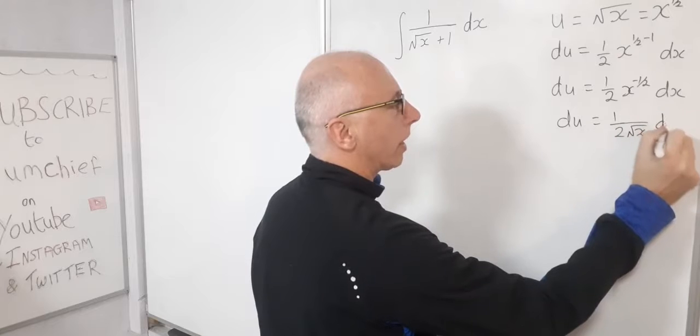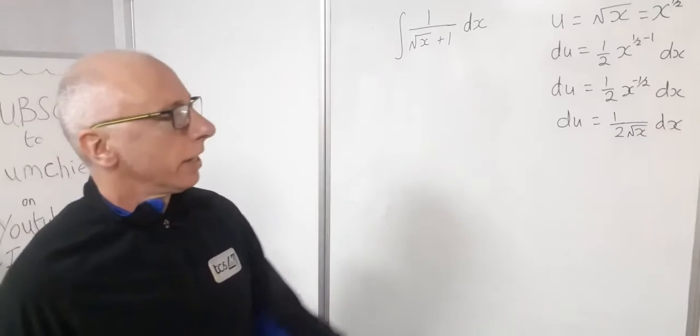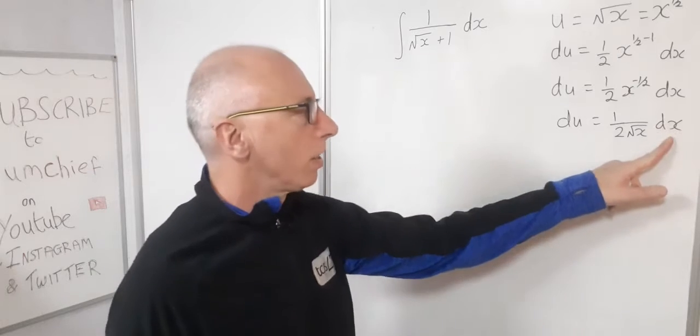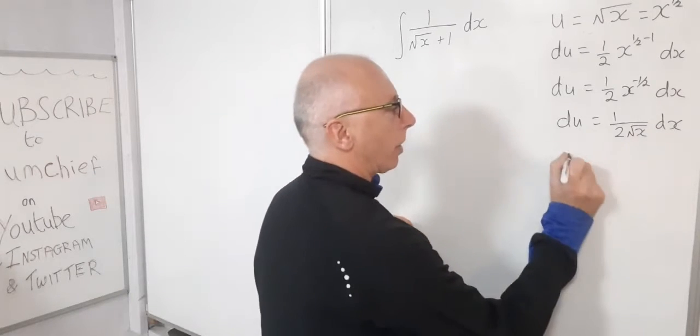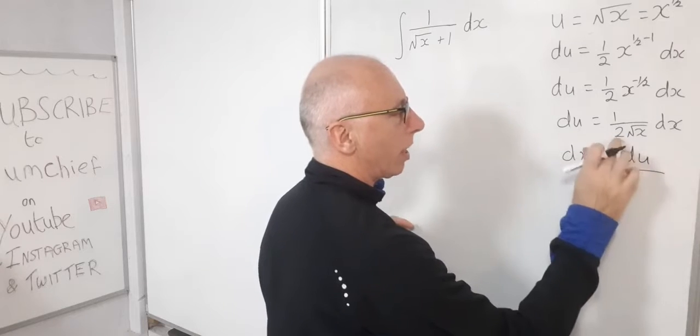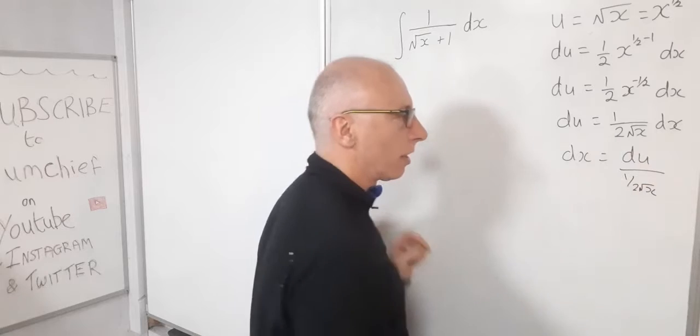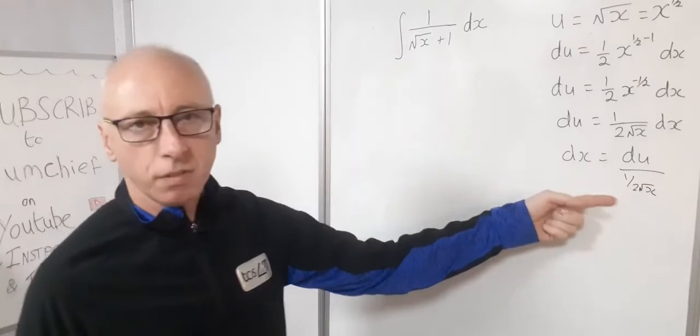And we can put that in our denominator. Next thing to do is isolate our dx. So now we get dx equals du divided by one over two root x. So now we can simplify this off a little bit more.